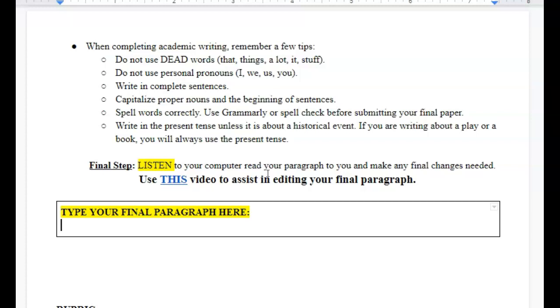If it's it, tell me what it is. If it's things, tell me what the things are. You cannot use personal pronouns: I, we, us, you. If you have those in there, you need to change your writing. You need to change it to one, society, people.